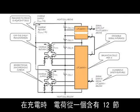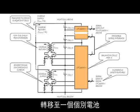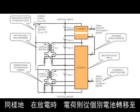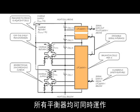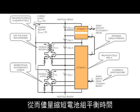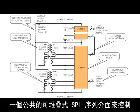When charging, charge is transferred to an individual cell from a group of 12 or more neighboring cells. Similarly, when discharging, charge is transferred from an individual cell to that same group of 12 or more neighboring cells. All balancers may operate simultaneously, minimizing stack balancing time, and all balancing is controlled via a common stackable SPI interface.